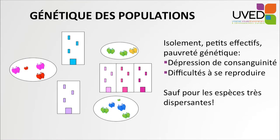Genetic characteristics of populations also have an incidence on their functioning. When the population is small, limited, and isolated, they tend to be poor genetically, and the individuals will inbreed, and this will lead to inbreeding-related depression.